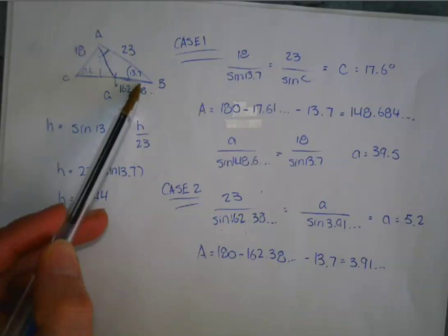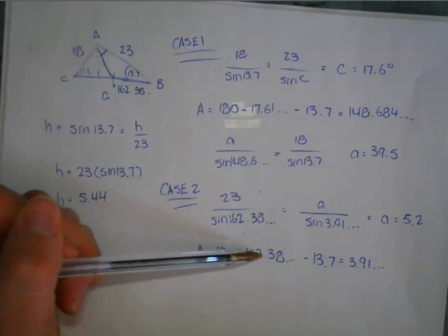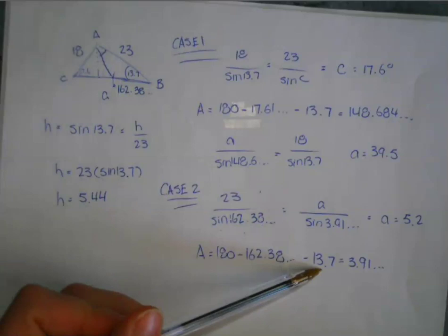So then again, you can do 180 minus the angle you just solved for, 162, and then minus the 13.7 that you were given initially. And that leaves you with an angle of 3.91 as this angle here.